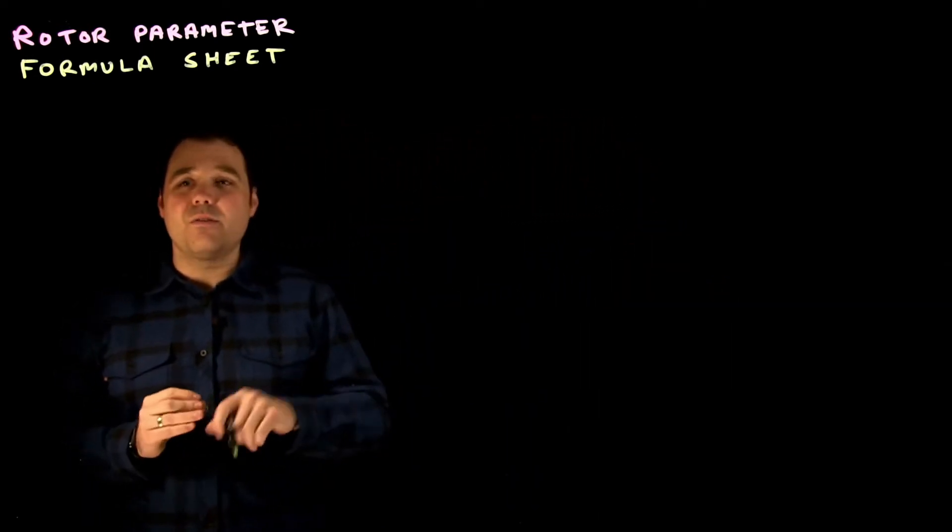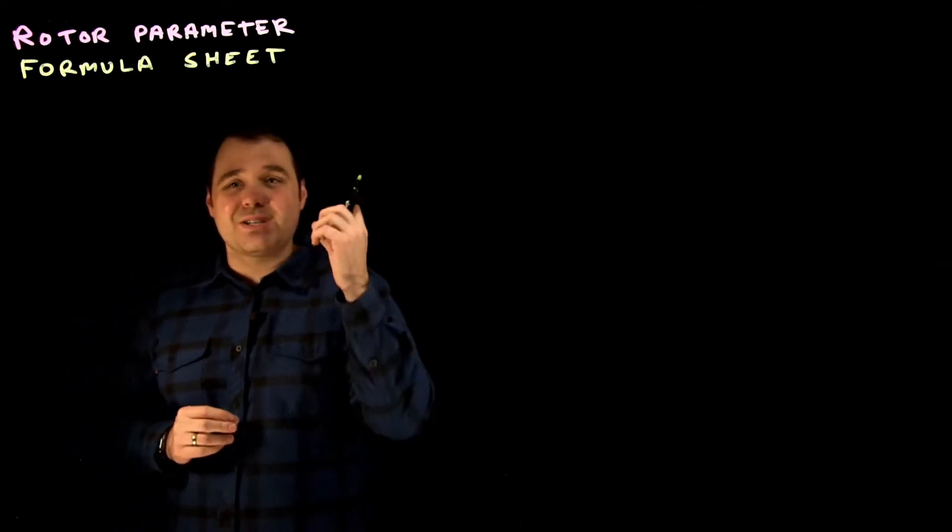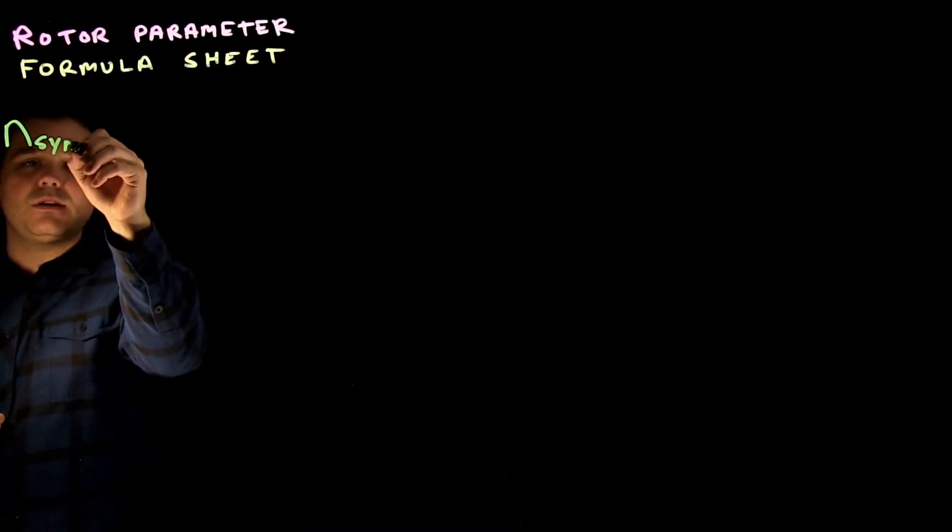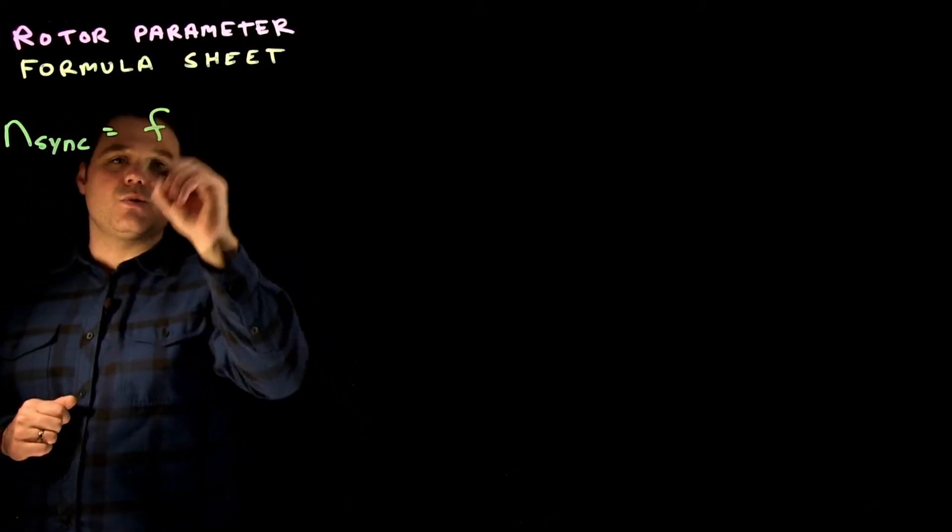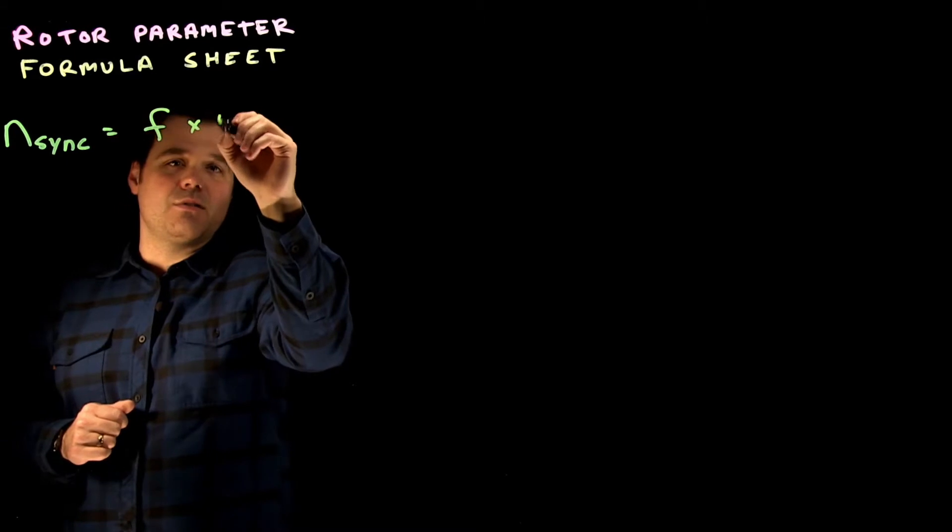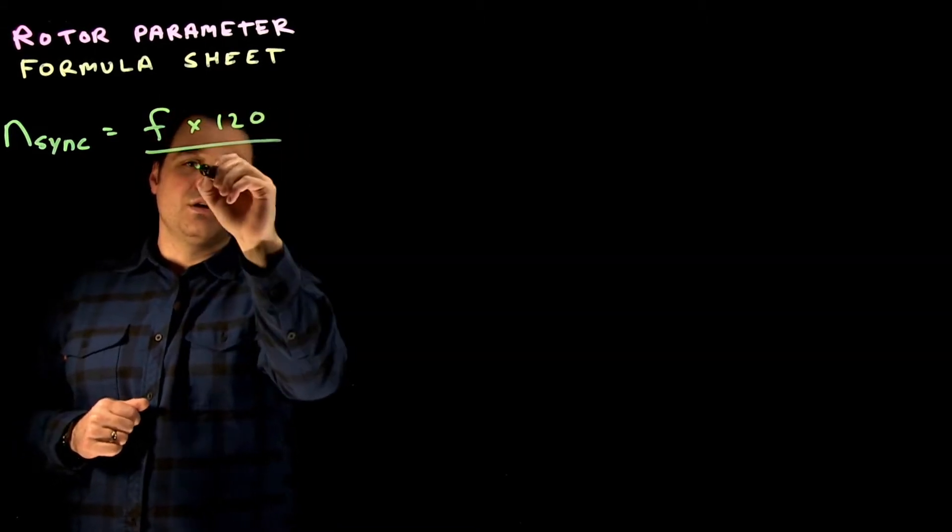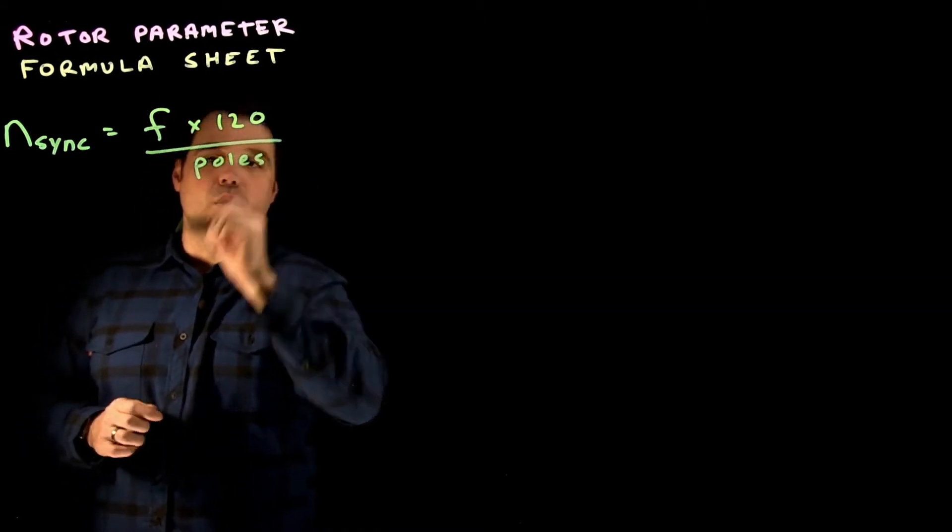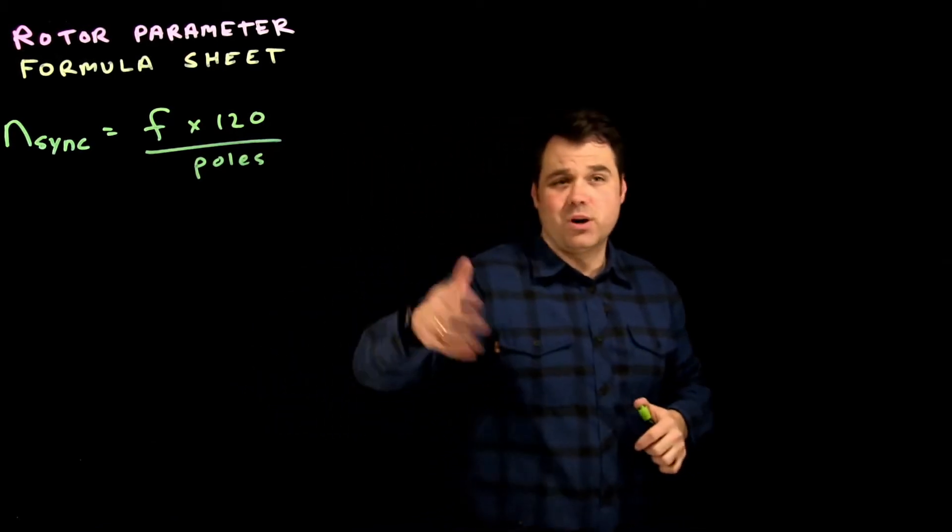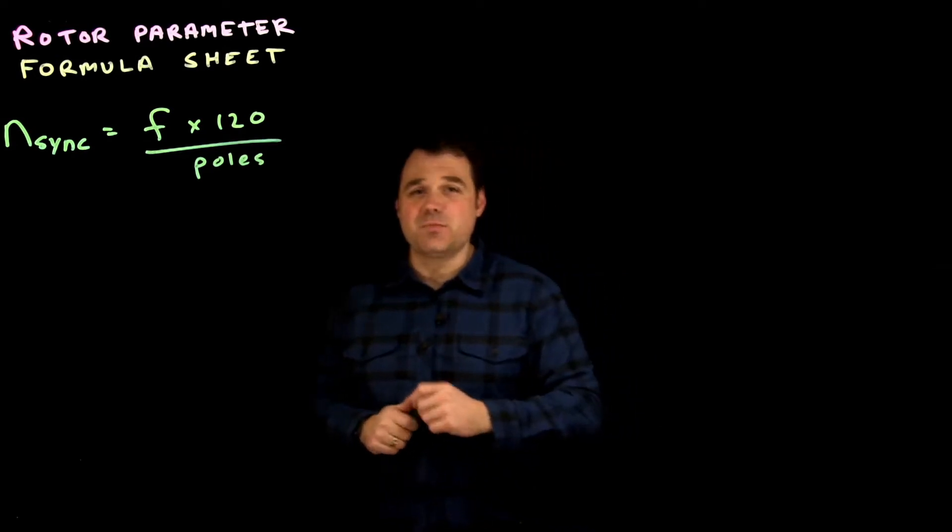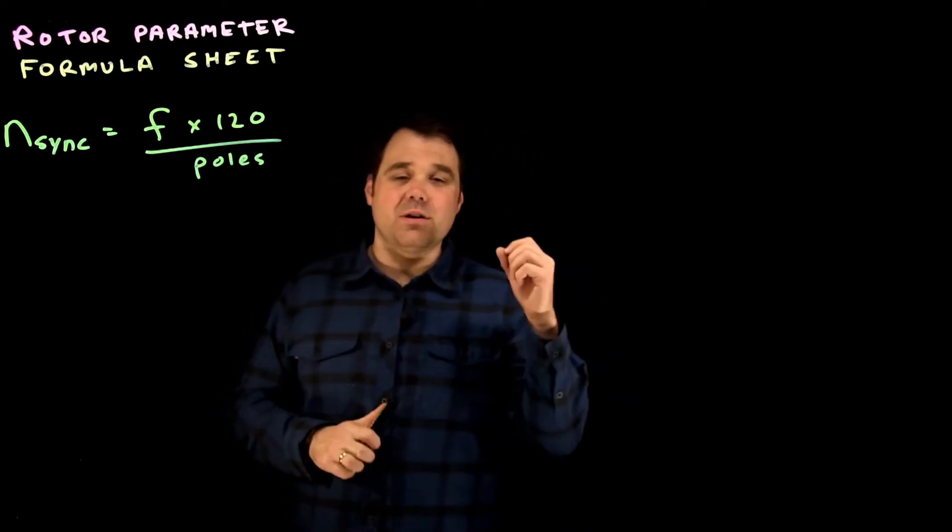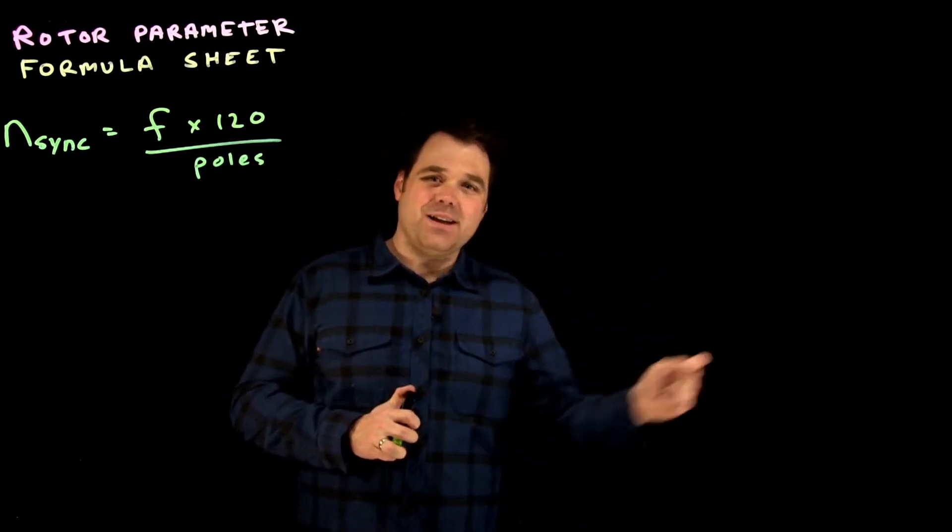So first up, a really important thing when it comes to rotor parameters is our synchronous speed. Synchronous speed is the speed of the rotor, right? We can get that by taking the source frequency, 60 hertz here in North America, times 120 divided by the number of poles. So 60 times 120, it's a four pole motor divided by four equals 1800. Perfect. Synchronous speed - speed of the rotor or stator rotating magnetic field.